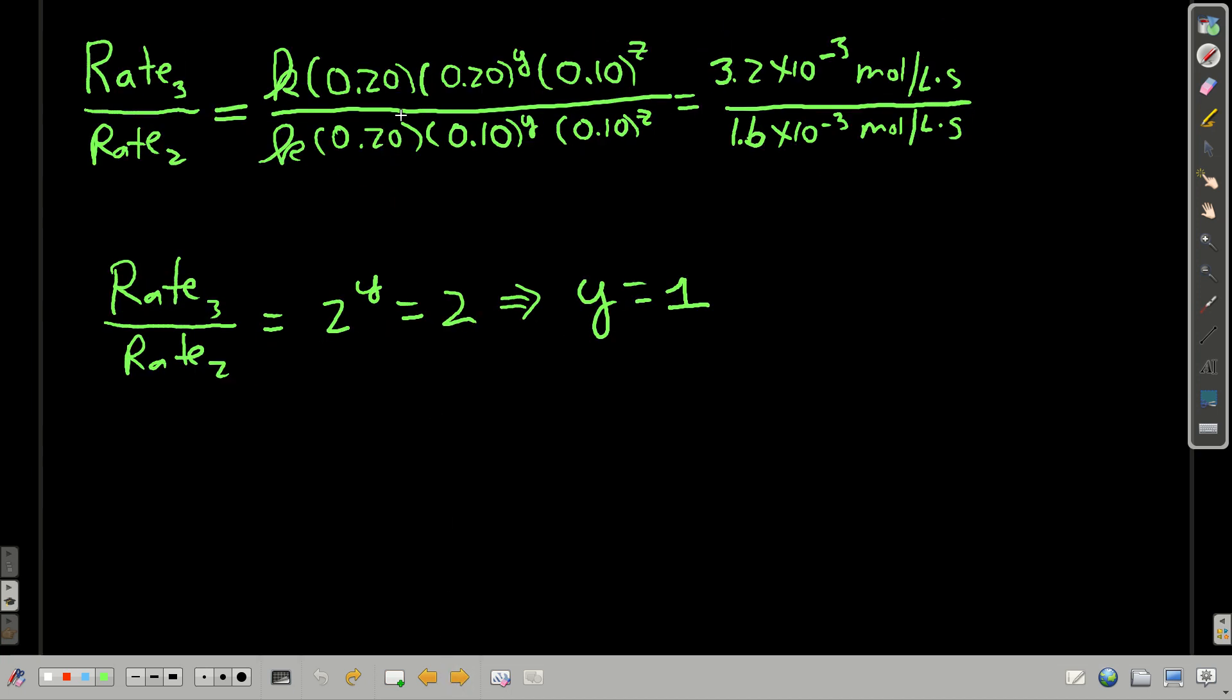So, doing the same thing, plugging in rate three divided by rate two gives us this. The k's cancel. And I didn't put an exponent here because now we know what it is. It's one, right? So that cancels. This cancels. And we have left 0.2 to the y over 0.1 to the y, which is 2 to the y. And the ratio of the rates gives us 2. So again, solving for y, now we know y is equal to 1.